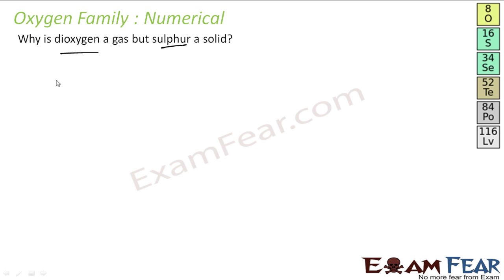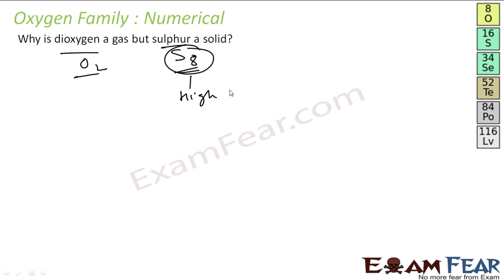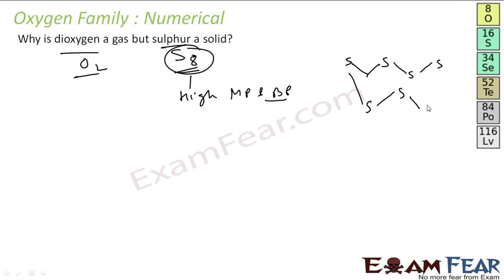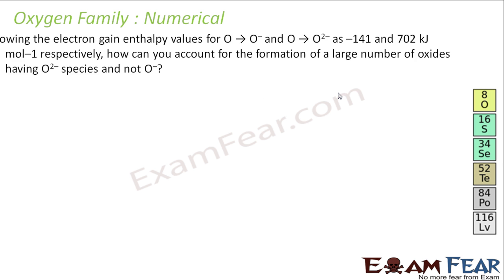Why is dioxygen a gas but sulfur is a solid? Sulfur exists as S₈ while dioxygen exists as O₂. S₈ has strong van der Waals forces of attraction due to its complex ring structure. Because of this, the melting point and boiling point of sulfur are high and it exists as a solid, whereas O₂ has only weak van der Waals forces.